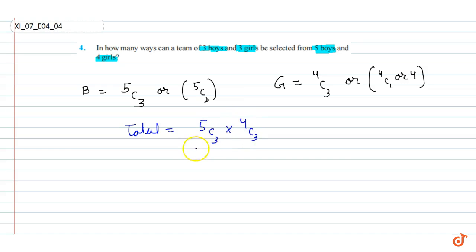Now this is equal to 5 into 4 upon 2, into 4. So we can simplify - 4 divided by 2 gives us 2. Now 5 into 4 is 20, and 20 into 2 is 40. So total ways are 40.